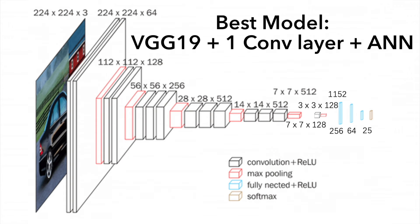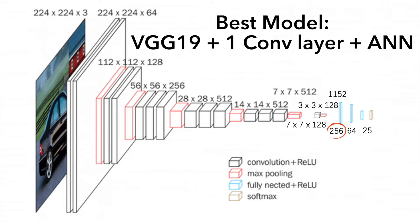Here comes our best model: a model with VGG19 features, followed by a convolutional layer and 3 fully connected layers. The convolutional layer in our classifier has 128 output channels with kernel size 3x3 and padding of 1, followed by a 2x2 max pooling layer. The hidden neurons for the 3 fully connected layers are 1152, 256, and 64 respectively. Finally, there are 25 neurons in the output layer, corresponding to the 25 classes.